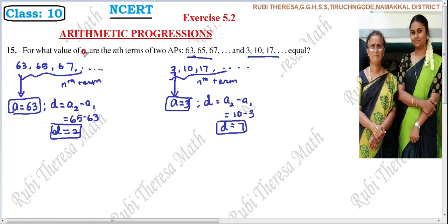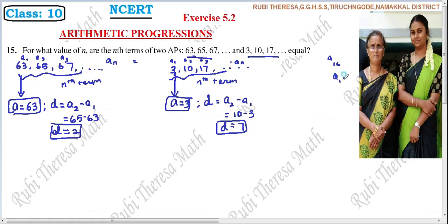So they have given two AP sequences and we have identified the initial terms and common differences. Now, in the first sequence we have terms A1, A2, A3 and so on up to the Nth term, and similarly in the second sequence we have A1, A2, A3 up to the Nth term.